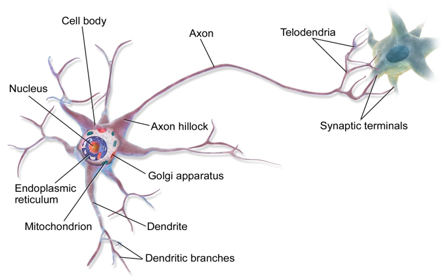A neuron, also known as a neurone and nerve cell, is an electrically excitable cell that communicates with other cells via specialized connections called synapses. All multicellular organisms except sponges and trichoplax have neurons. A neuron is the main component of nervous tissue.